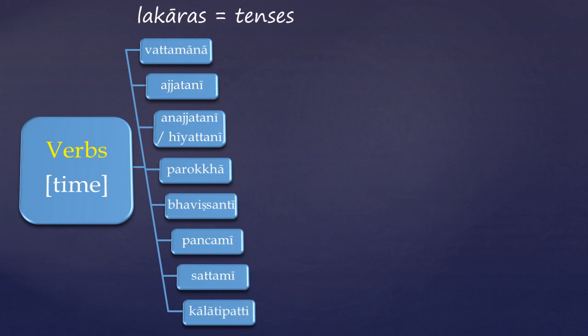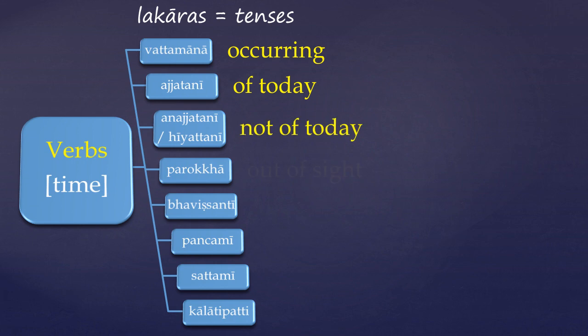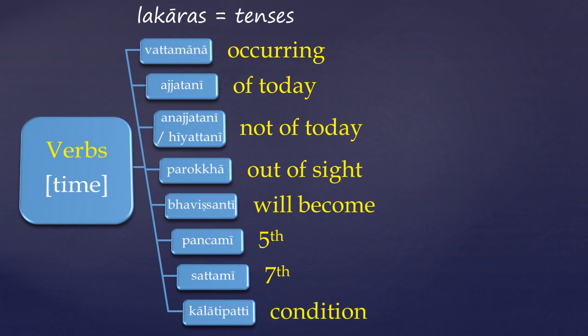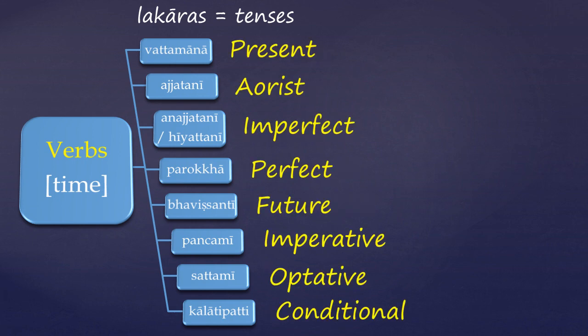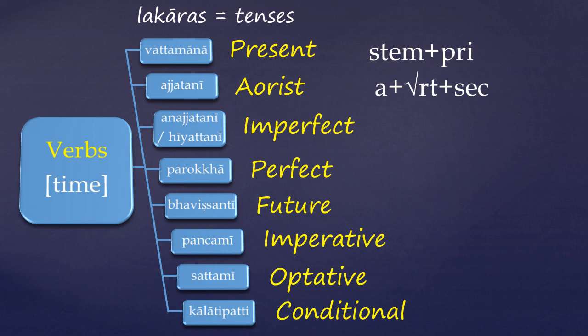The names of these tense groups can be roughly translated as: what's occurring, of today, not of today, out of sight, what will become, the fifth, the seventh, and the condition. But it's more usual to give these groups their names as they align with the Greek tenses. Although these terms are called tenses, they're actually just alternative sets of derivation. For instance, present tense verbs are based on the present stem and take the primary personal endings. The aorist is characterised by the augment prefix added to a verb root, and takes the secondary personal endings. There is another tutorial explaining verb inflection if you need a refresher on these terms.